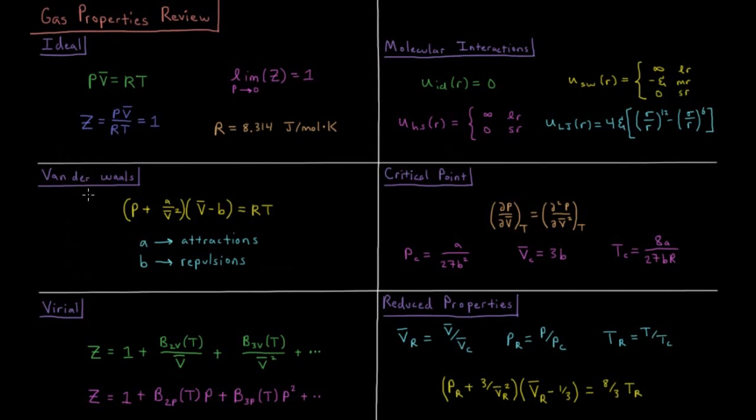We can expand on this with the van der Waals equation of state, where we have an additional parameter for the attractions between pairs of molecules and the repulsions due to the finite amount of space that each molecule occupies. P plus A over V bar squared, quantity times V bar minus B equals RT.